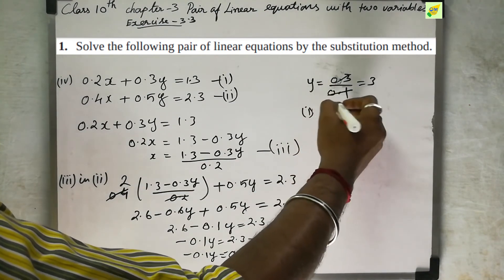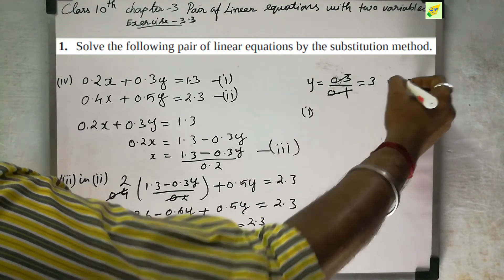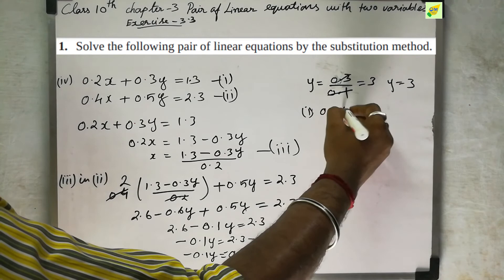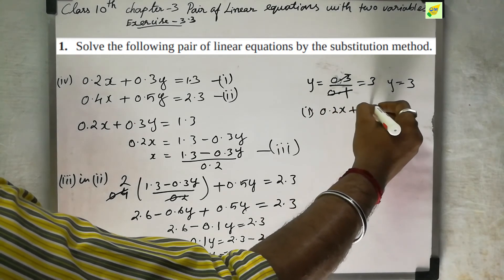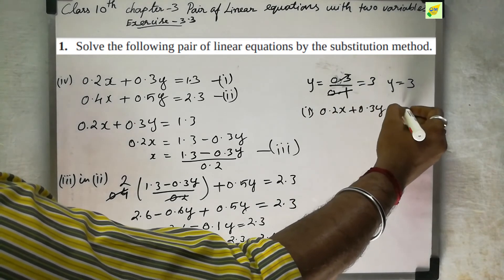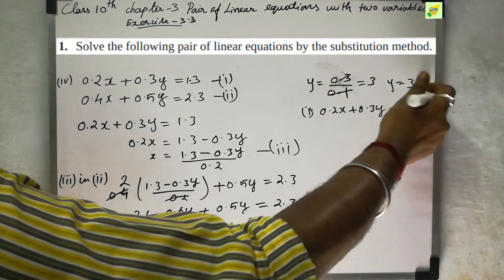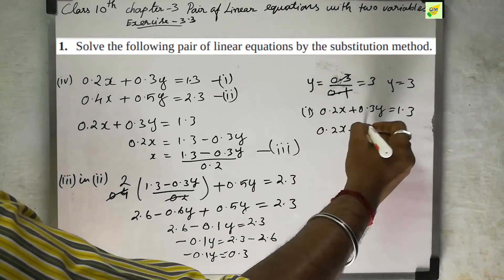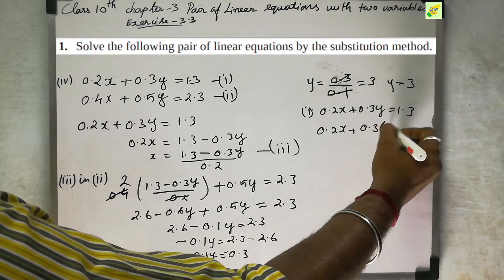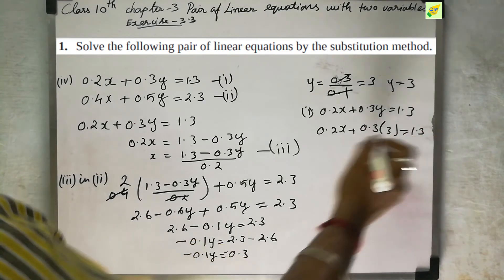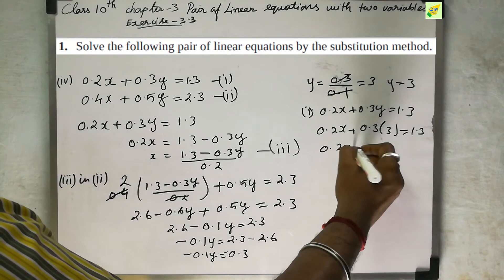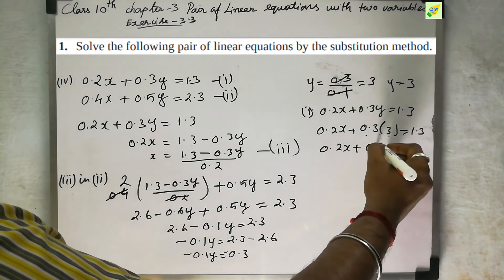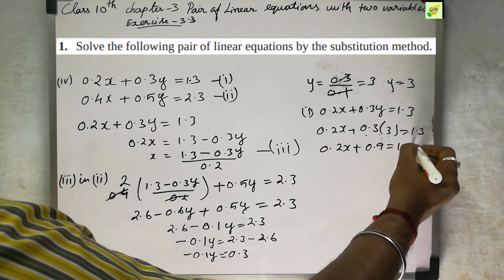With y equal to 3, substitute back into the first equation: 0.2x plus 0.3y equal to 1.3. Substituting y = 3: 0.2x plus 0.3 into 3 equal to 1.3. So 0.2x plus 0.9 equal to 1.3.